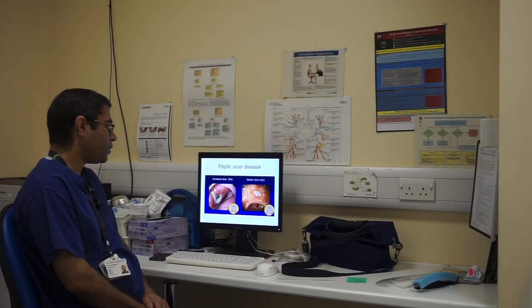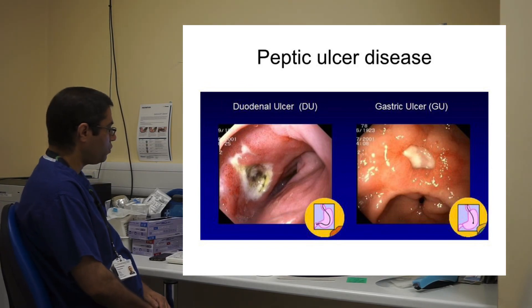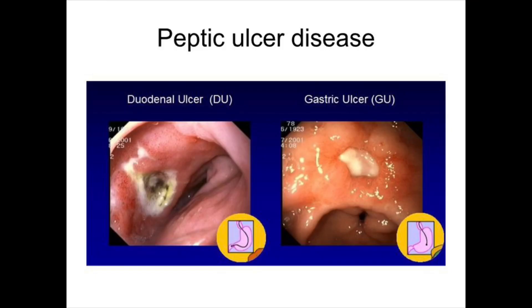Peptic ulcer disease is pretty common. These endoscopic views show patients with peptic ulcer disease. There are sub-classifications — endoscopic descriptions of these ulcers — as part of the Forrest classification, which gives you the chances of re-bleed. We would not expect the acute medical team to classify ulcers, since this is an endoscopic classification, but peptic ulcer disease by far remains the most common cause.